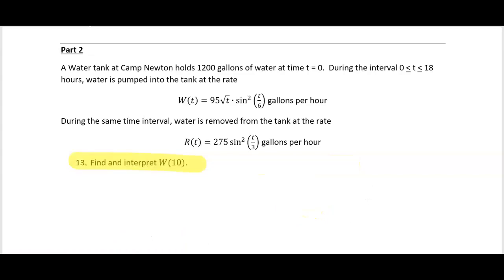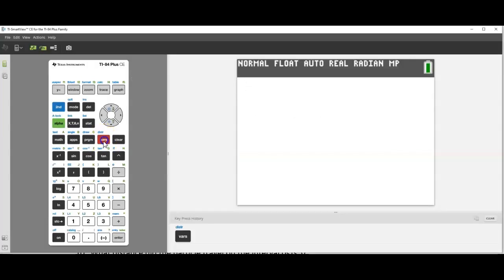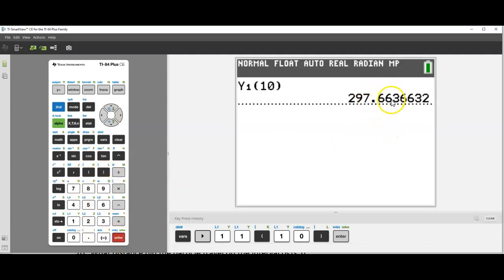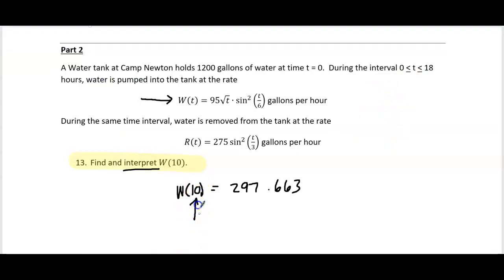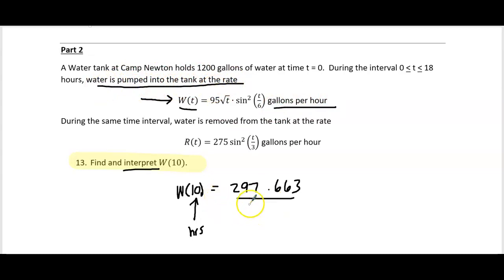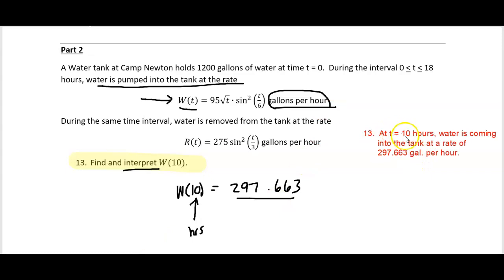Number thirteen: find and interpret W of ten. We plug ten into the W function. Using the calculator with W stored as Y1, W(10) is approximately 297.663. The ten represents ten hours, and W is measured in gallons per hour. Interpretation: at t equals ten hours, water is coming into the tank at a rate of 297.663 gallons per hour.